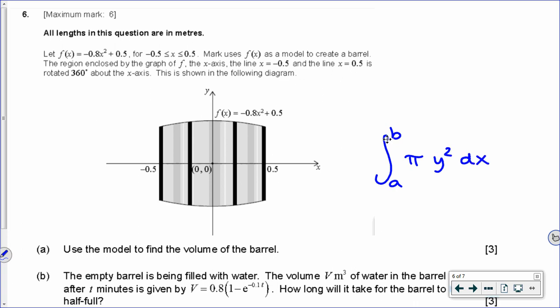So your function becomes the radius of a bunch of cylinders. We don't really need to worry about all that. We just need to use the formula. So here we have a function given, and it's rotated around the x-axis between negative 0.5 and positive 0.5 to create this barrel shape. Use the model to find the volume of the barrel.